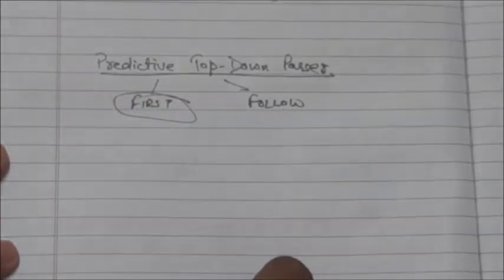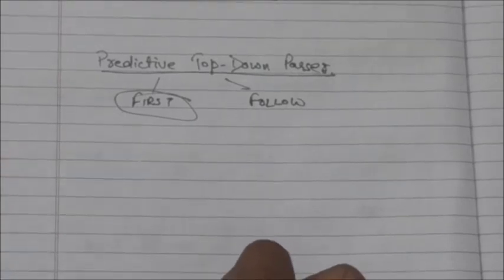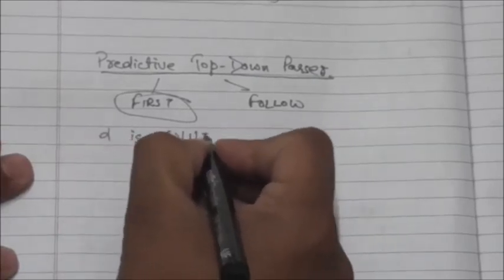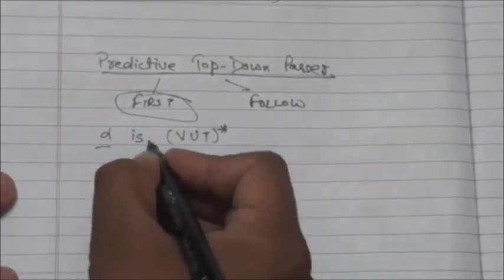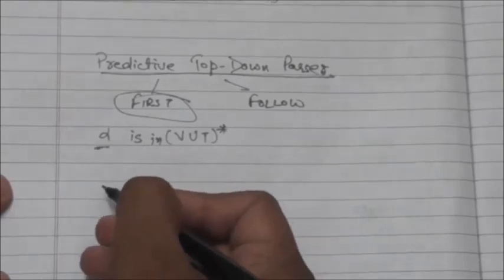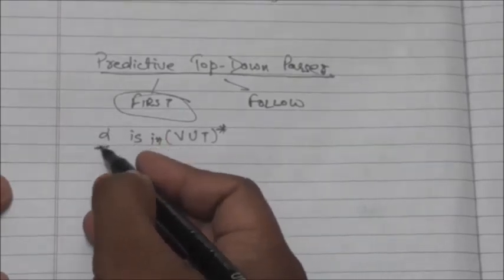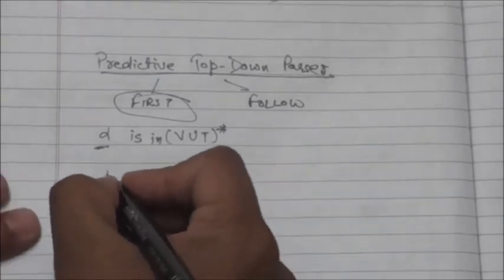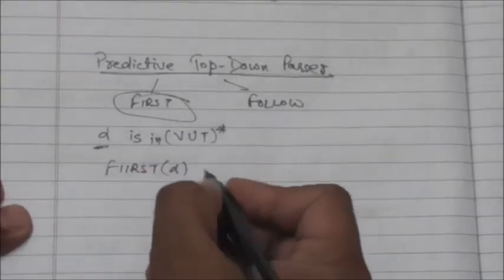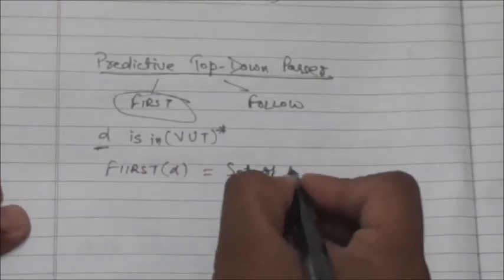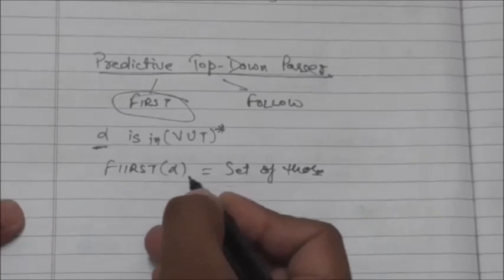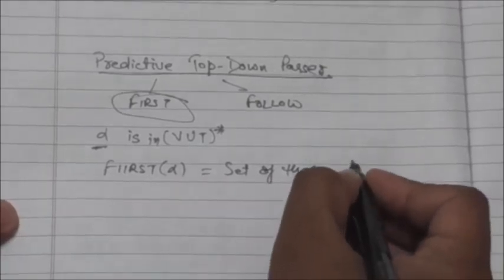In this tutorial we will study about FIRST. Suppose there is a string alpha, which consists of variables and terminals, and it could be an empty string also. What will be the FIRST of alpha? The FIRST of alpha is the set of those terminals with which the strings derivable from alpha start.